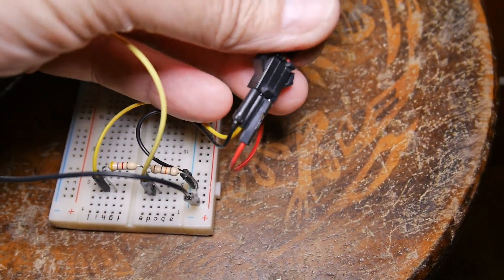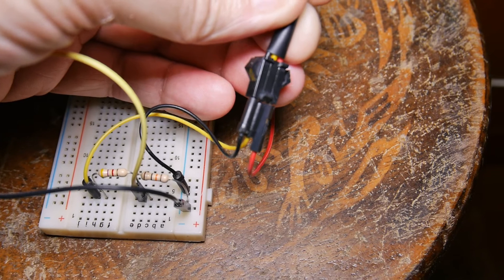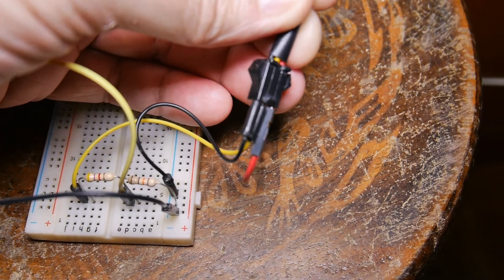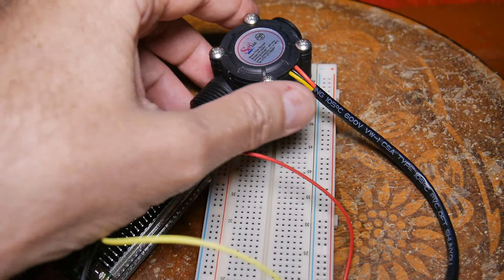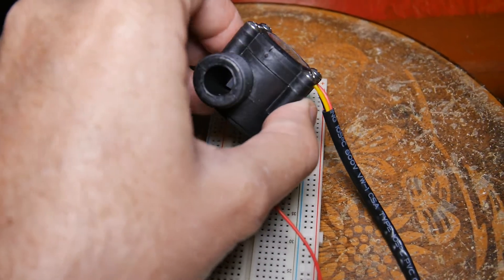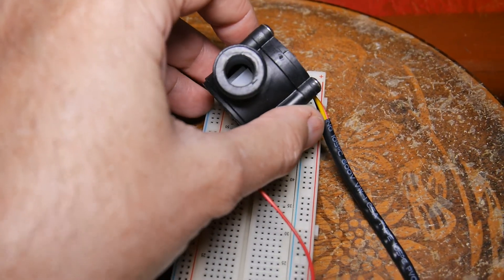There's our plug. So red goes to red, yellow in the middle, black. That all checks. There's our meter. You can see the impeller inside there.